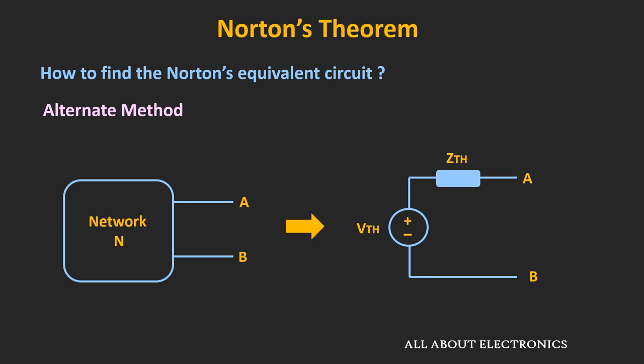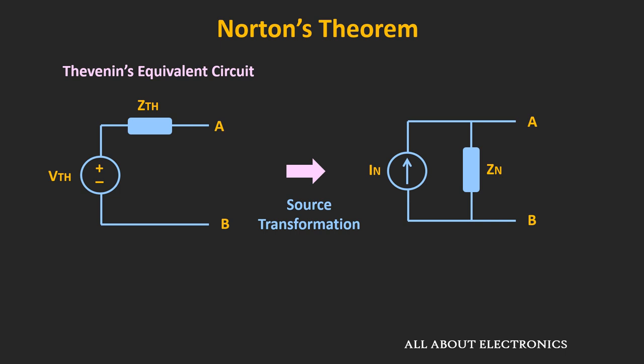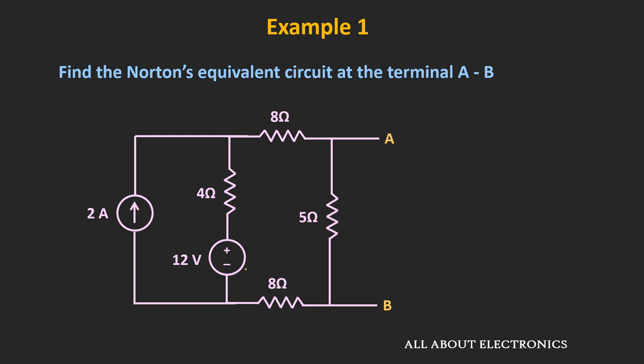Alternatively, for the given network, we can first find the Thevenin's equivalent circuit and then use source transformation to convert it into the Norton's equivalent circuit. The Norton's equivalent resistance or impedance is the same as the Thevenin's equivalent impedance, while the Norton's current In equals Vth divided by Zth. In fact, the Thevenin's and Norton's equivalent circuits are duals of each other. So now let's take some examples on Norton's theorem.